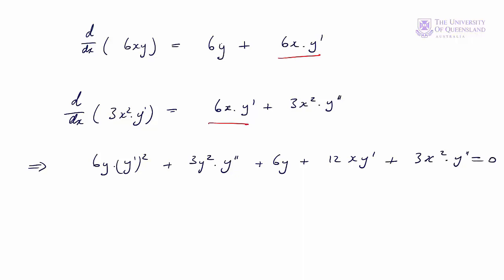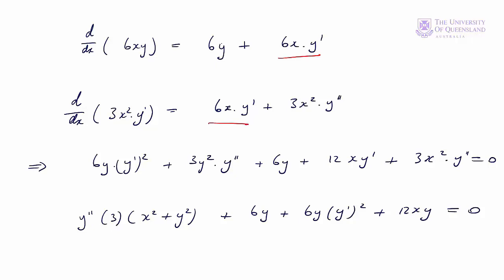Collecting the y″ terms: y″·(3x² + 3y²) + 6y·y′² + 6y + 12x·y′ = 0. We could substitute in x = 2, y = 1 and the known value of y′ at that point directly into this equation and solve for y″. However, let's see if we can find an explicit form for y″.